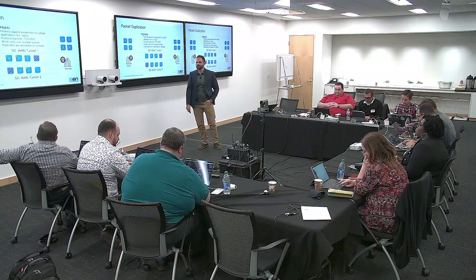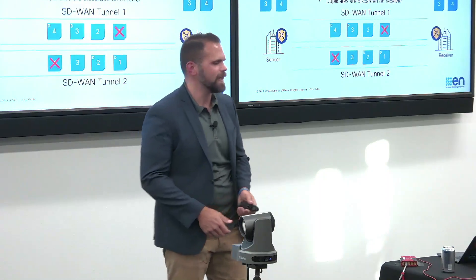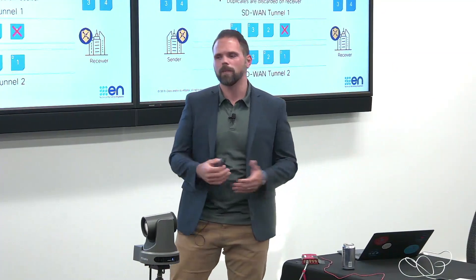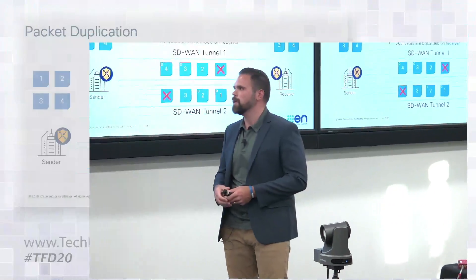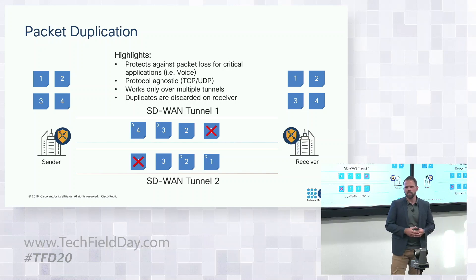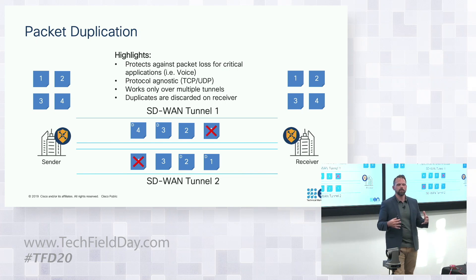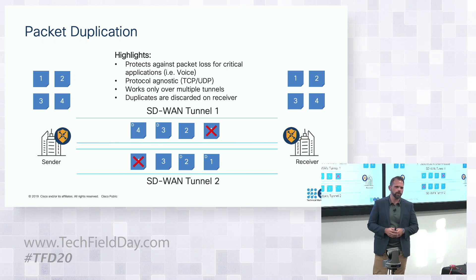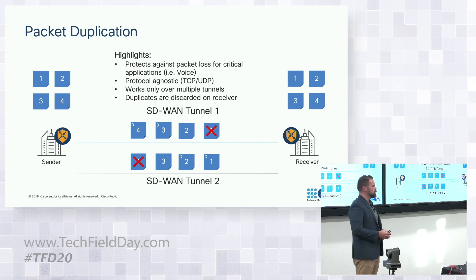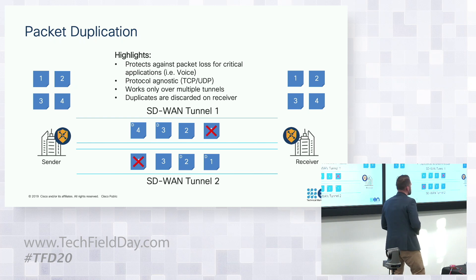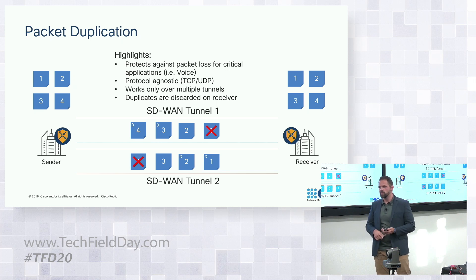The next feature is pretty self-explanatory: two is always better than one. For applications that need the utmost reliability and zero loss, we have packet duplication. If you have two circuits, you can identify the application or stream you want to duplicate, and we'll duplicate it across two separate links. If traffic is lost on one link, we pick it up off the other. Both FEC and packet duplication are protocol-agnostic — you can use them with TCP, UDP, ESP, or any protocol.